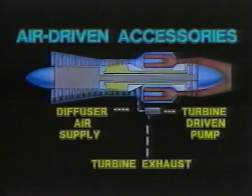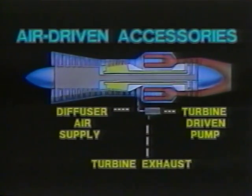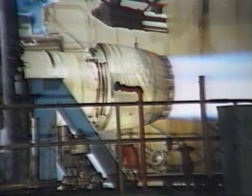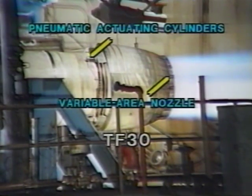Not all accessories are driven mechanically by a gearbox. Some can be driven by compressed air from the compressor or diffuser section of the engine. For example, one of our engines has an afterburner fuel pump that incorporates a small air turbine — compressed air from the diffuser section flows through the air turbine and causes the pump to rotate. On other engines, air pressure is used to control the opening of the variable area exhaust nozzle. Compressor air is also used to drive accessories on the airplane. However, we have to limit this customer air bleed to a small percentage of the engine airflow — more than this would reduce engine performance too much.